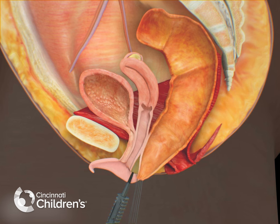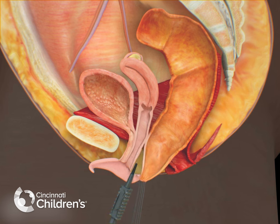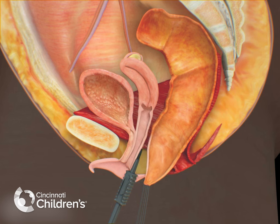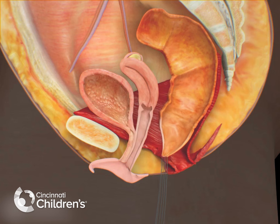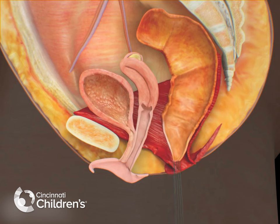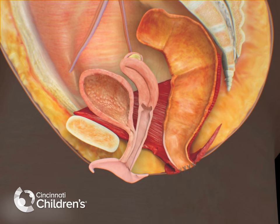In order to separate the two, a plane must be created. This connection is often 2–3 cm in length. At this point, it is relatively easy to move the rectum into the appropriate position in the center of the anal sphincters, as seen in this demonstration.